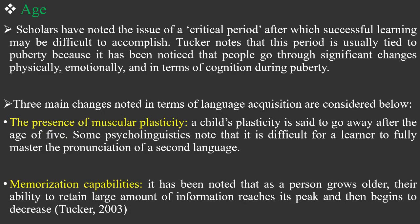Another factor is age. Scholars have noted the issue of a critical period after which successful learning may be difficult to accomplish. Tucker notes that this period is usually tied to puberty because people go through significant changes physically, emotionally, and in terms of cognition during puberty. After a critical period, it is difficult to learn a language because the body of adults goes through some transformations — physically and emotionally — which creates problems in language acquisition.